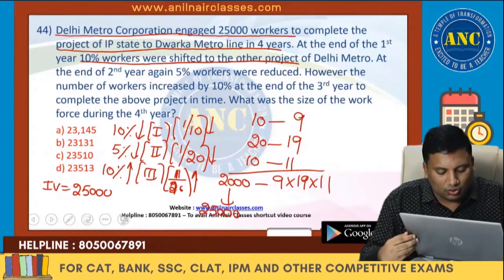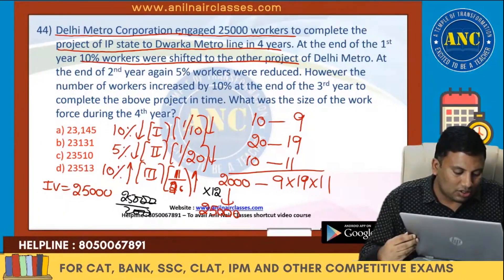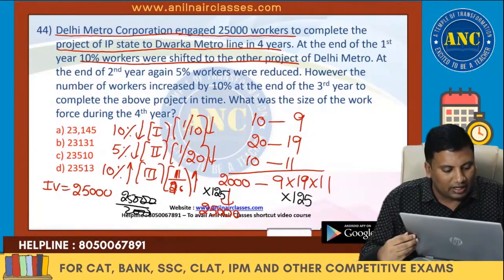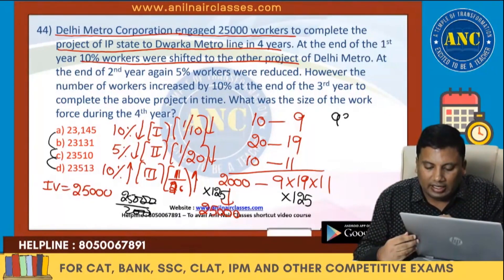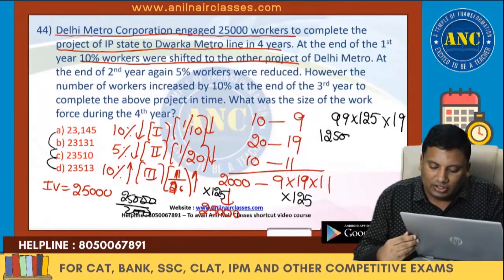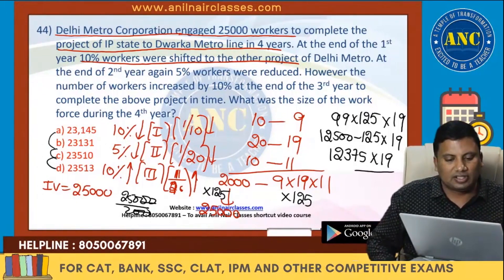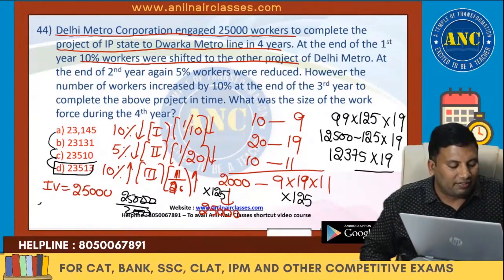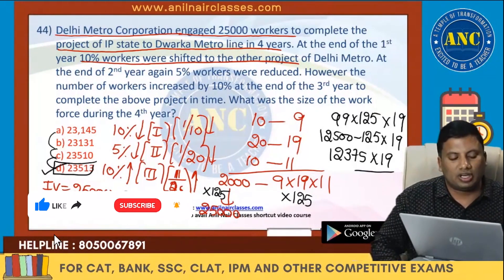Two zeros cancel from 25,000 and 2000, giving 250/20 = 12.5. So the calculation is 25,000 × (9 × 19 × 11)/2000 = 125 × 9 × 19 × 11 / ... Note: all options are extremely close to each other, so be careful. 99 × 125 = 12,375. Then 12,375 × 19 gives the final answer of approximately 23,512.5, which rounds to 23,513.